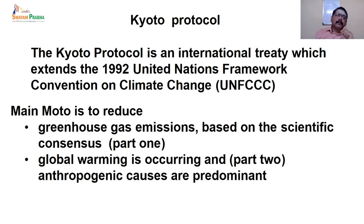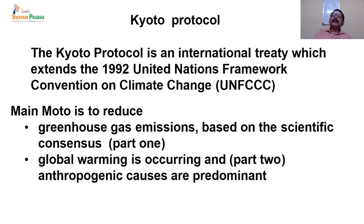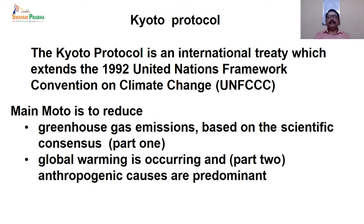The next protocol is the Kyoto Protocol, which came into action to take a step against climate change. People felt there is severe climate change with frequent droughts and improper distribution of rainfall. This international treaty was signed at Kyoto under the United Nations Framework Convention on Climate Change in the year 1992. The main goal was to reduce greenhouse gas emissions based on scientific consensus. Anthropogenic causes are predominant and people started looking onto reducing greenhouse gas emissions through various anthropogenic activities.